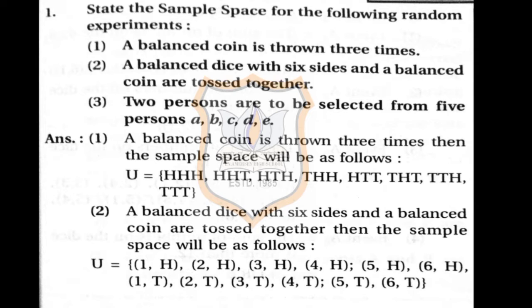State the sample space for the following random experiments. The first is: a balanced coin is thrown three times. Now let's make the sample space of throwing a coin three times. When you are throwing a coin three times, you may get heads on all three coins. So the sample point will be H, H, H.